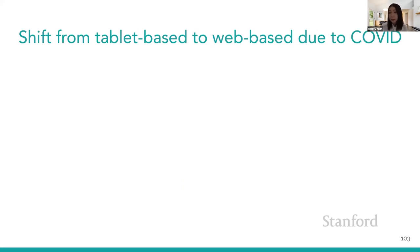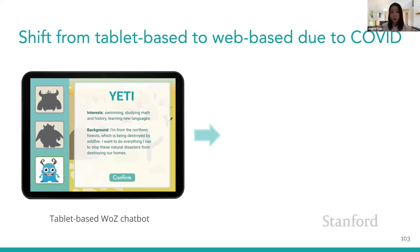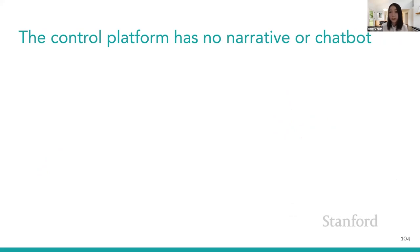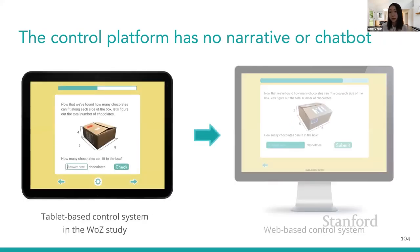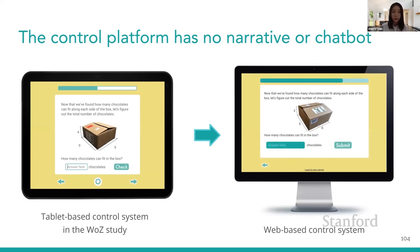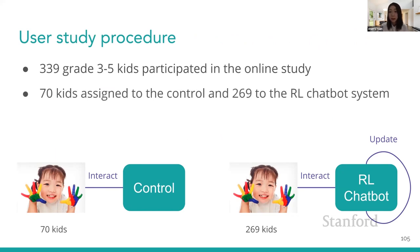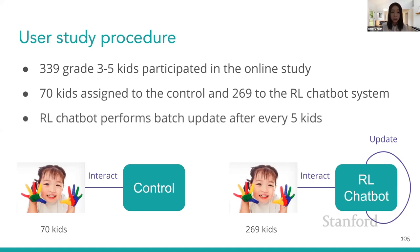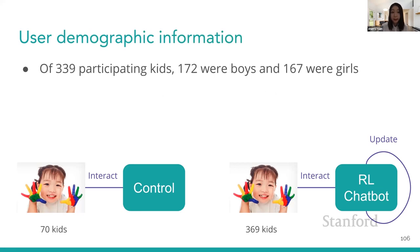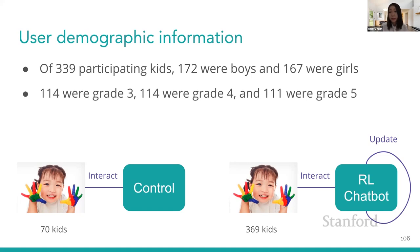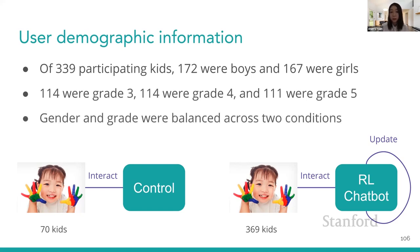Because of COVID, we migrated our app from tablet to desktop as a web learning app. We performed a large-scale online study where 339 grade 3 to 5 kids participated — 70 assigned to the control condition and 269 to the RL chatbot condition. We let the RL chatbot perform batch updates after every 5 kids. These 339 children were well-balanced in terms of gender and grade across the two conditions.